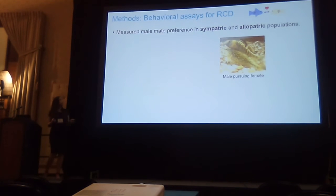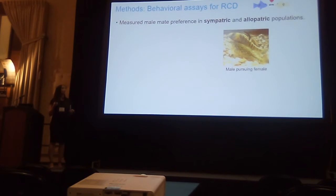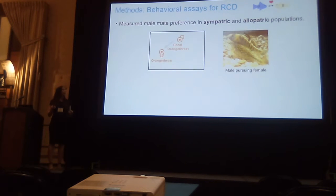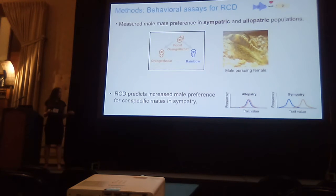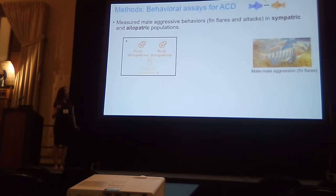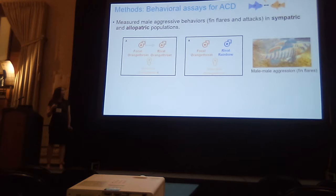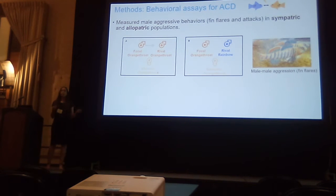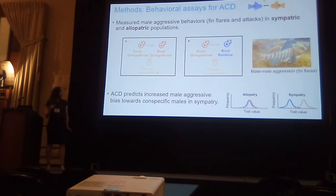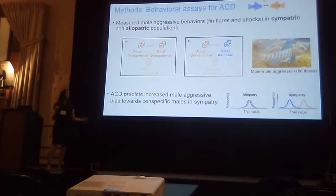To measure reproductive character displacement, I measured male mating preferences in sympatric and allopatric populations, and compared a focal male's preference for conspecific versus heterospecific females. Reproductive character displacement predicts increased male preference for conspecific mates in sympatry. To test for agonistic character displacement, I measured male aggressive behavior — fin flares and attacks — where a focal male was observed interacting with a conspecific rival male and a heterospecific rival male in random order. Agonistic character displacement predicts increased male aggressive bias towards conspecifics versus heterospecifics in sympatry relative to allopatry.